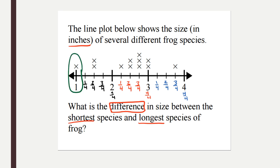This is telling us that there's one frog that's one inch long. Then I'm going to find the longest — if I look at my line plot, the biggest number we have is whole number four, but there's no X over it, so there's no frog that's four inches long. The longest species must have an X, so it's actually this number right here. What's important to note is that this fraction is not just three fourths — three fourths by itself would be less than one. Three fourths has to have the whole number three in front of it, so we read these numbers as three and one fourth, three and two fourths, three and three fourths.